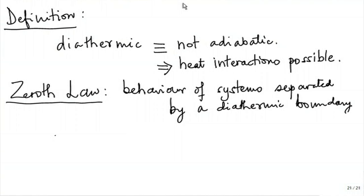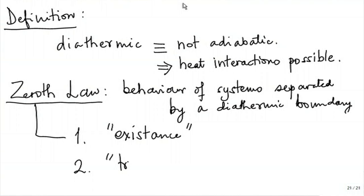The zeroth law has two parts: first, what I will call the existence part, and second, the transitivity part — that is, if A is in thermal equilibrium with B and B is in thermal equilibrium with C, then A will be in thermal equilibrium with C. Let us see how this is developed.